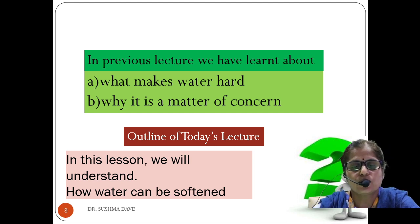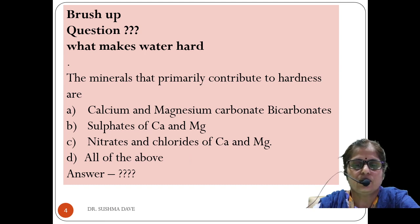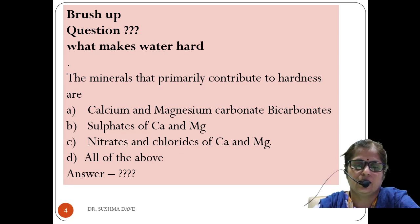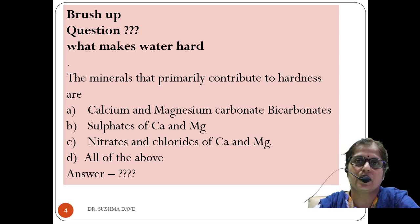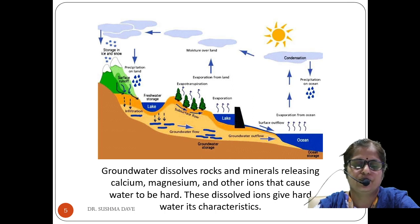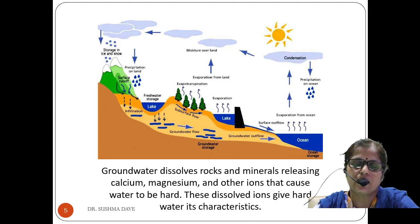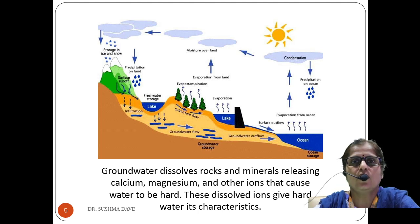From the previous lecture, the question comes: what minerals primarily contribute to hardness? We have four options — calcium, magnesium carbonates, bicarbonates, sulphates, nitrates, and chlorides of calcium and magnesium. The answer is all of the above. Groundwater dissolves rocks and minerals, releasing calcium, magnesium, and other ions that cause the water to be hard.